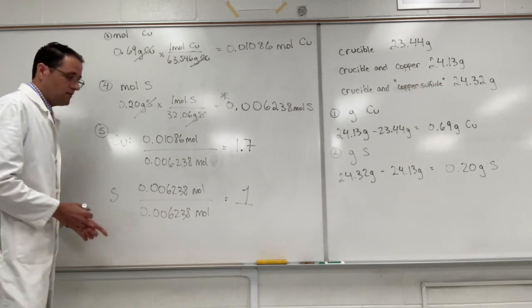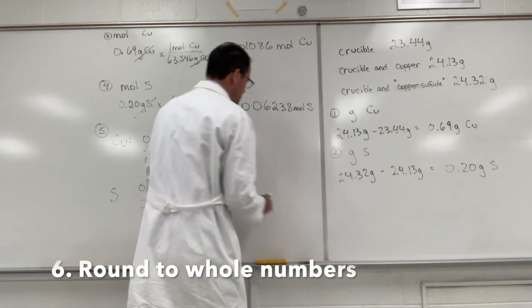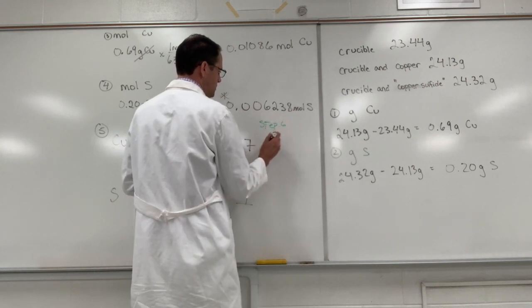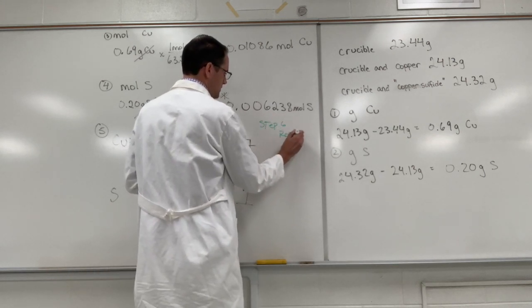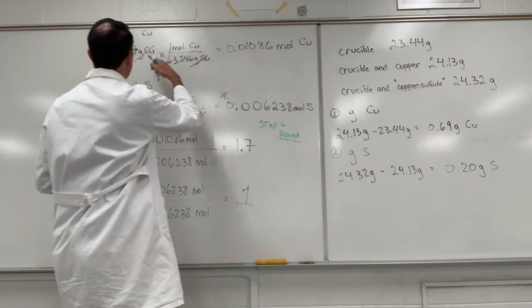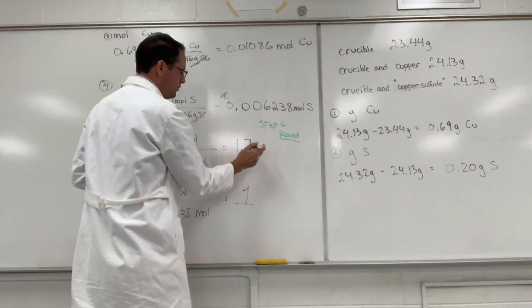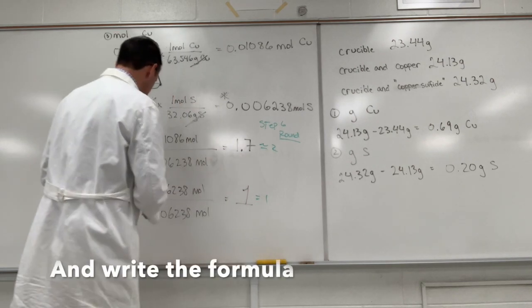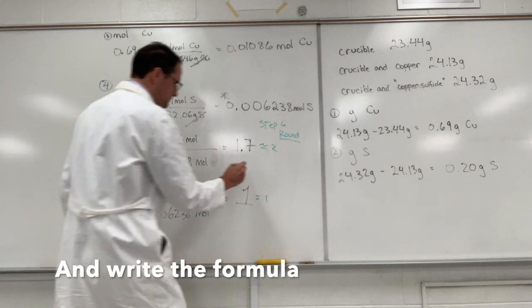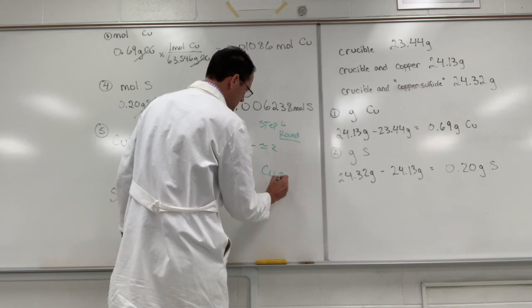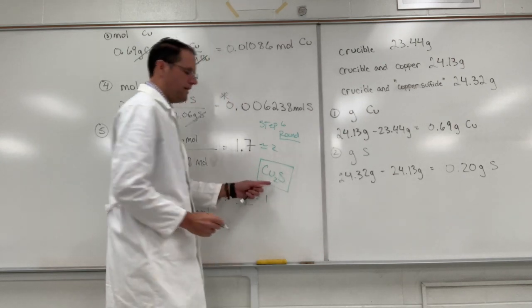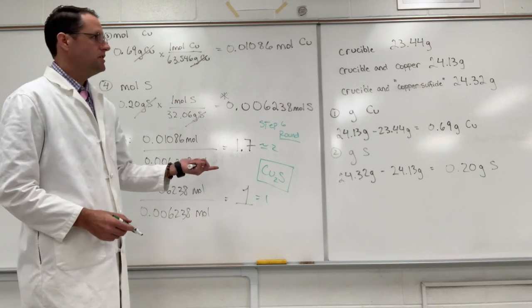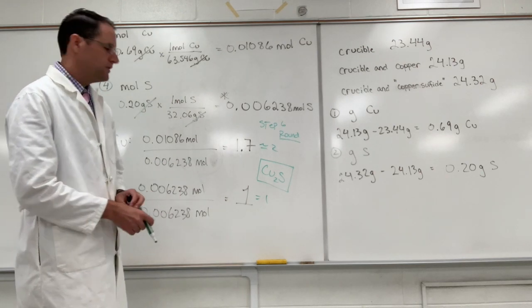So, step 6, we need to round these off to the whole number. So, you can see why I did not do that in steps 3 and 4. 1.7 is about 2. 1 is 1. And so, the formula is going to be Cu2S. That is my final answer that I'm trying to find for this lab. The name of that would be copper(I) sulfide.